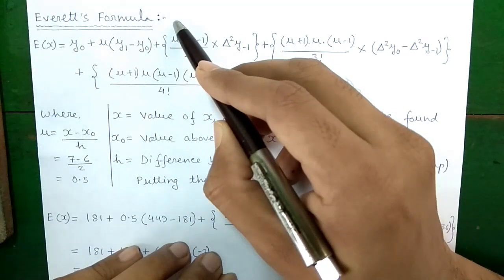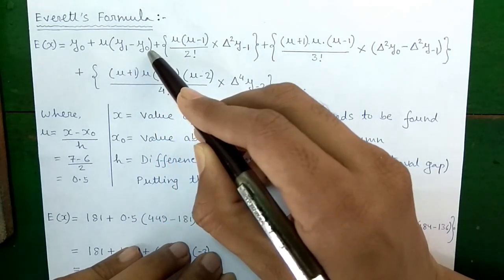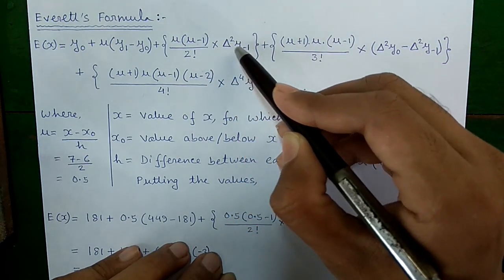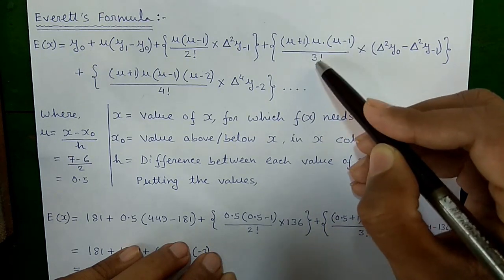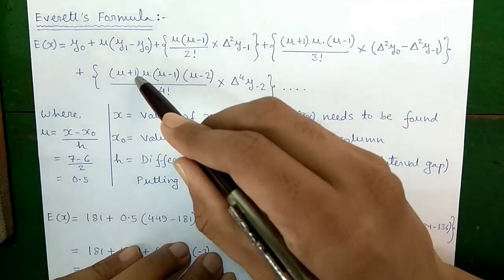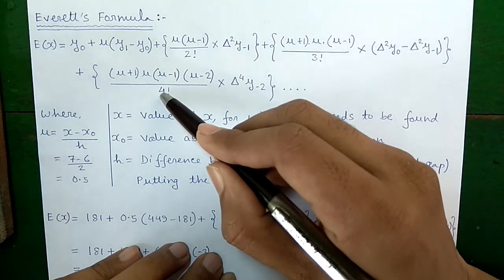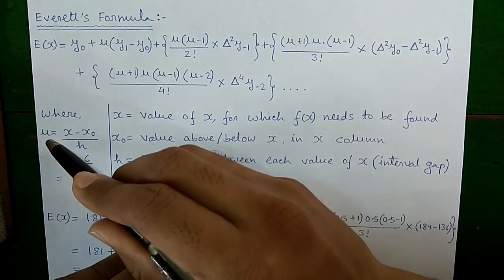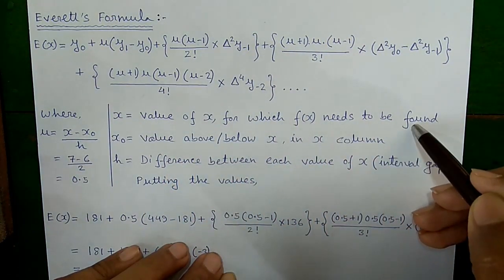Everett's formula E(x) is given by: y₀ + u(y₁ − y₀) + u(u−1)/2! × Δ²y₋₁ + (u+1)u(u−1)/3! × (Δ²y₀ − Δ²y₋₁) + (u+1)u(u−1)(u−2)/4! × Δ⁴y₋₂ + … where u is given by (x − x₀)/h, with x being the value for which f of x needs to be found.